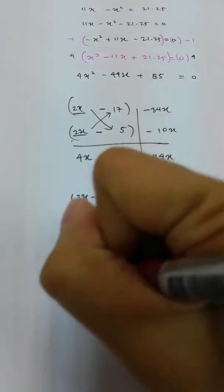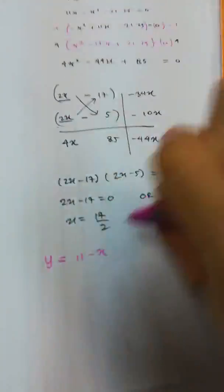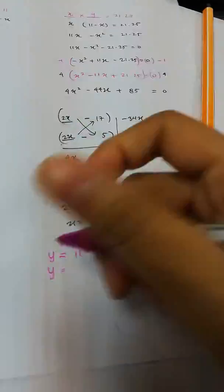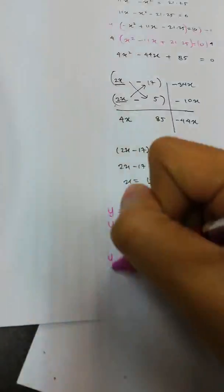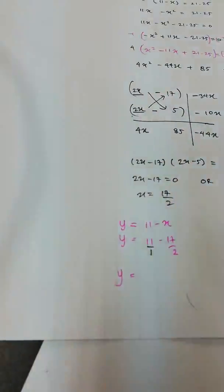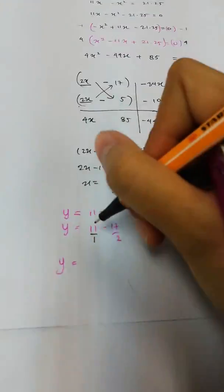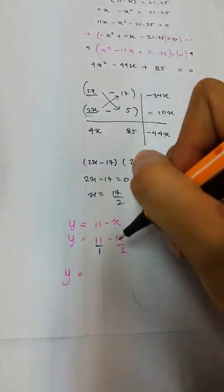So when y equals 11 minus x, and my x equals 17 over 2, what will I get? So imagine this is 11 over 1 to make it easier. When we would like to add or subtract fraction, we need to multiply with 2 and 2.